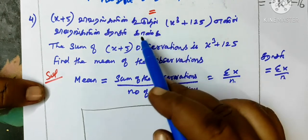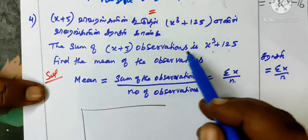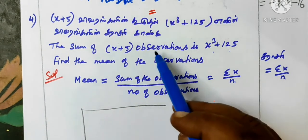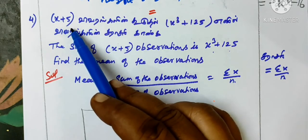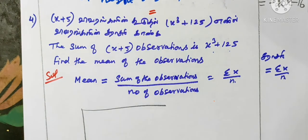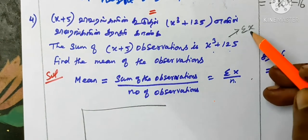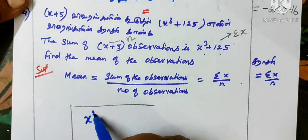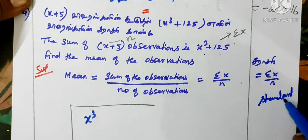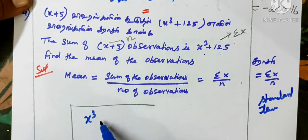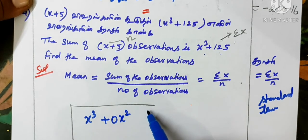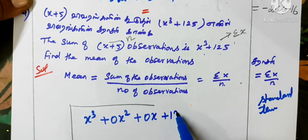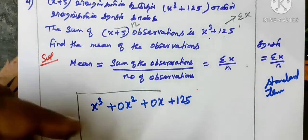Last question of this video. Sum of observations is x cube plus 125. Number of observations is x plus 5. Find the mean. Mean formula: sum of observations by number of observations, that is sigma x by n. So we divide x cube plus 125 by x plus 5. Standard form is required — x cube term, no x square term, no x term, constant term 125 — so we write 0x square and 0x.